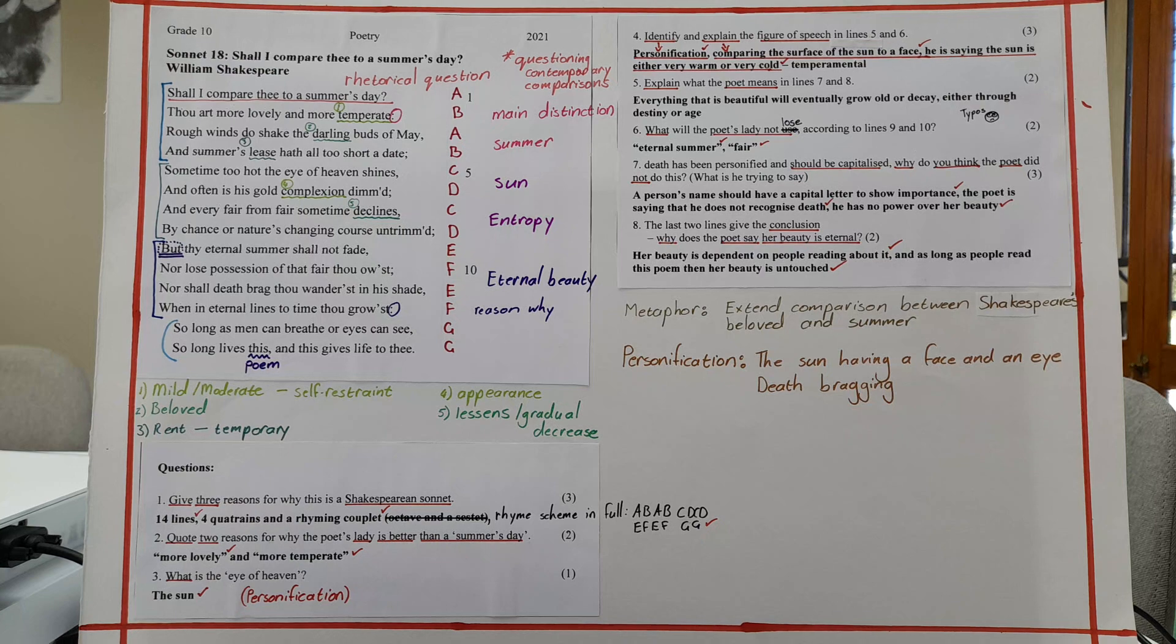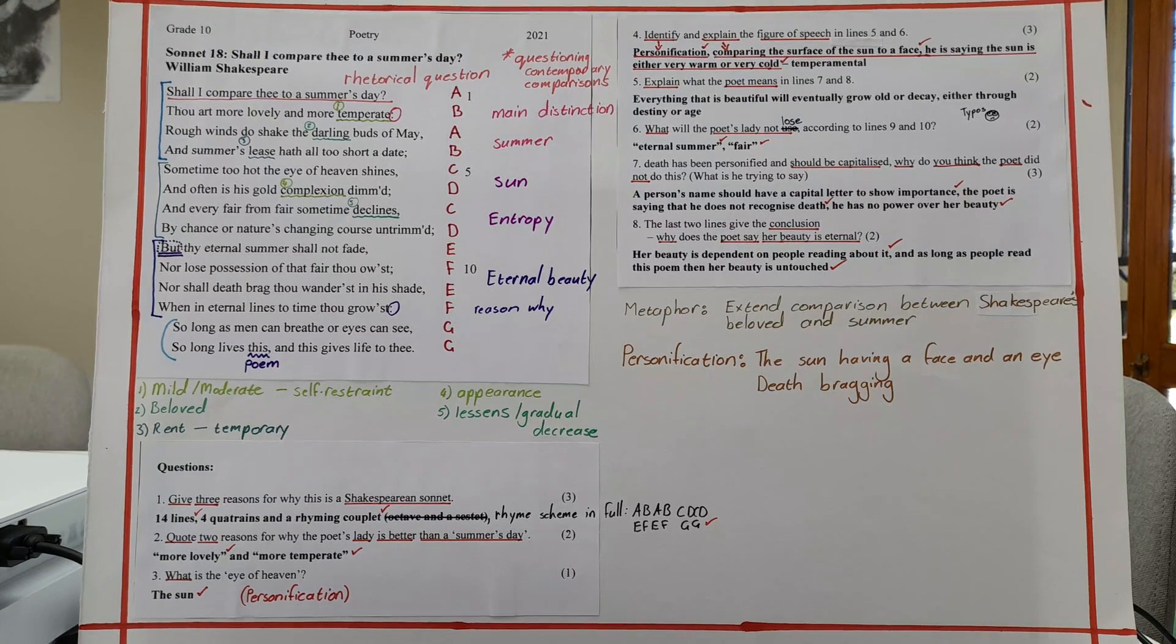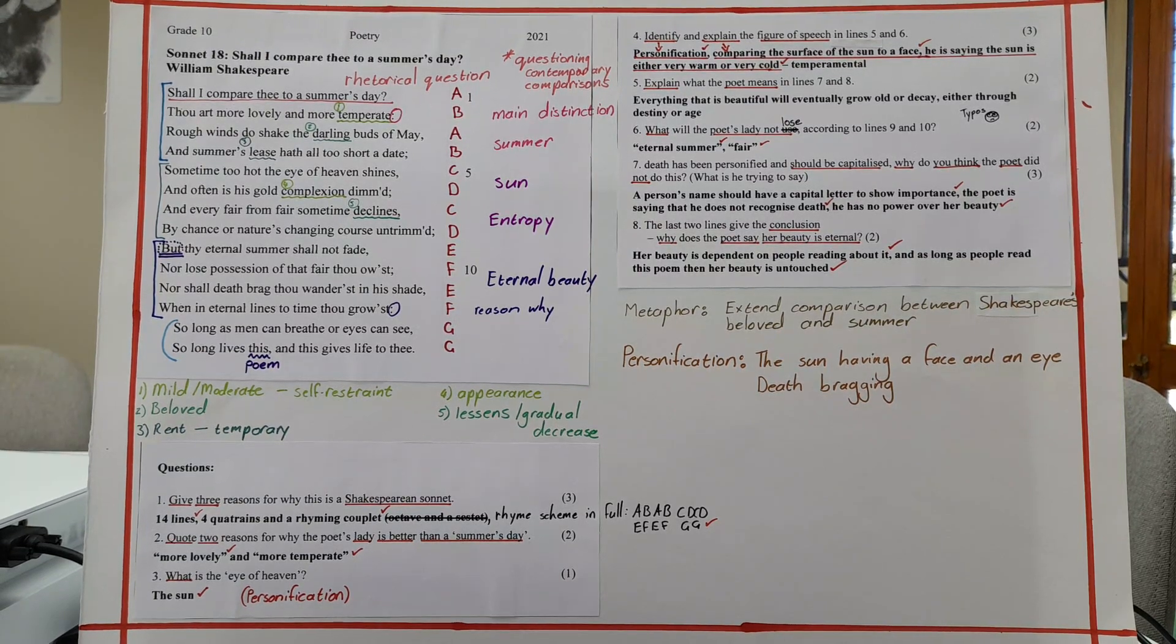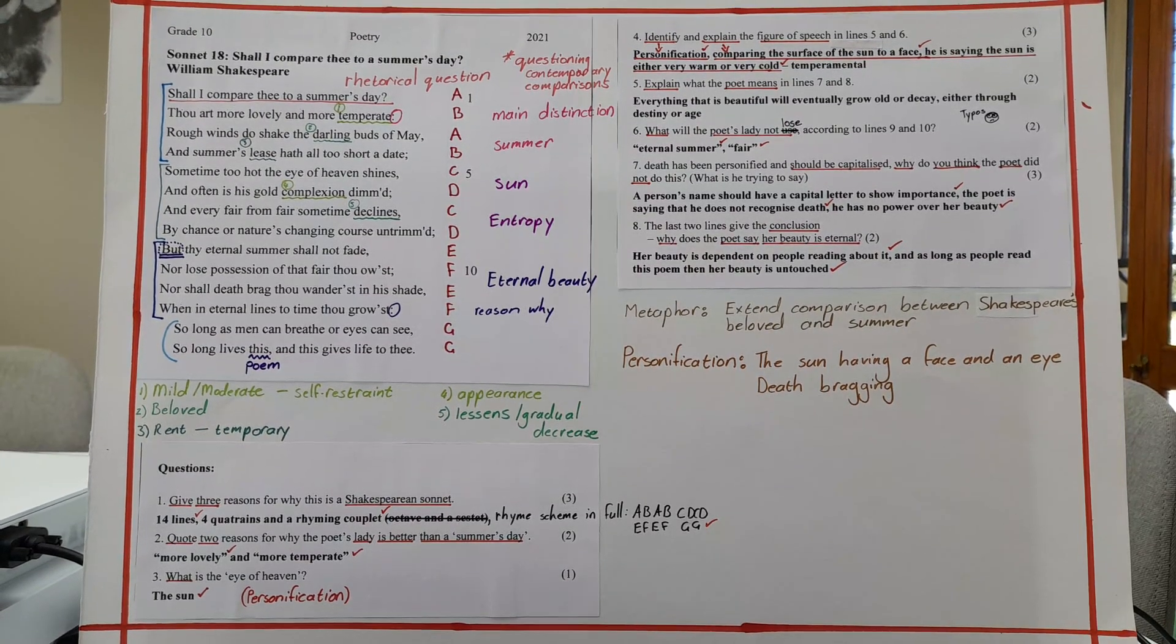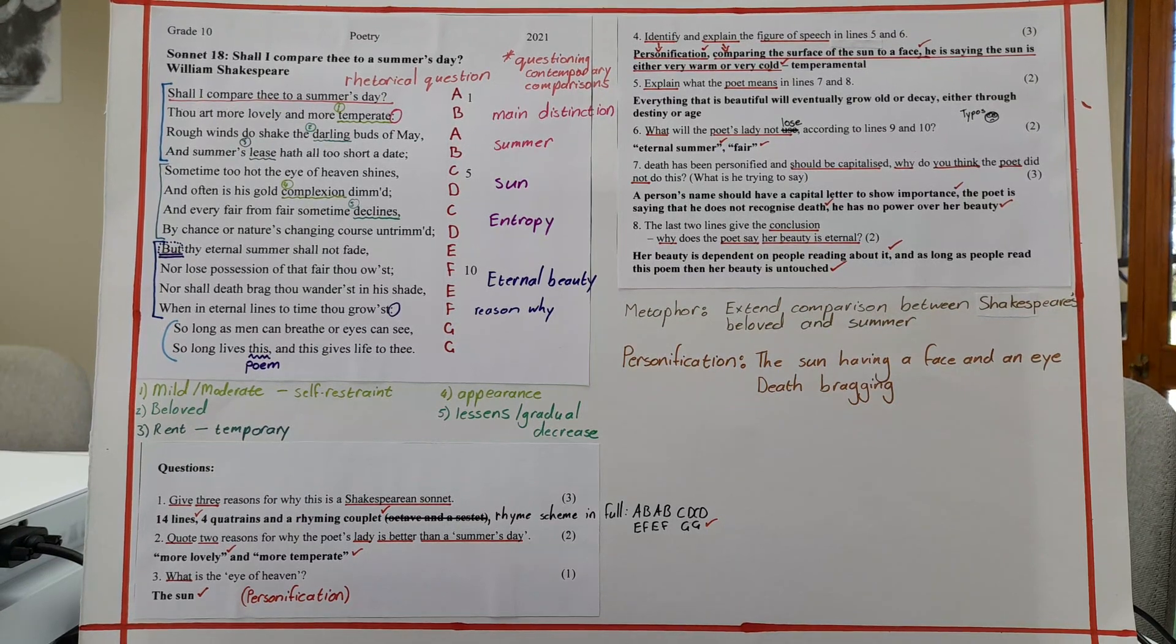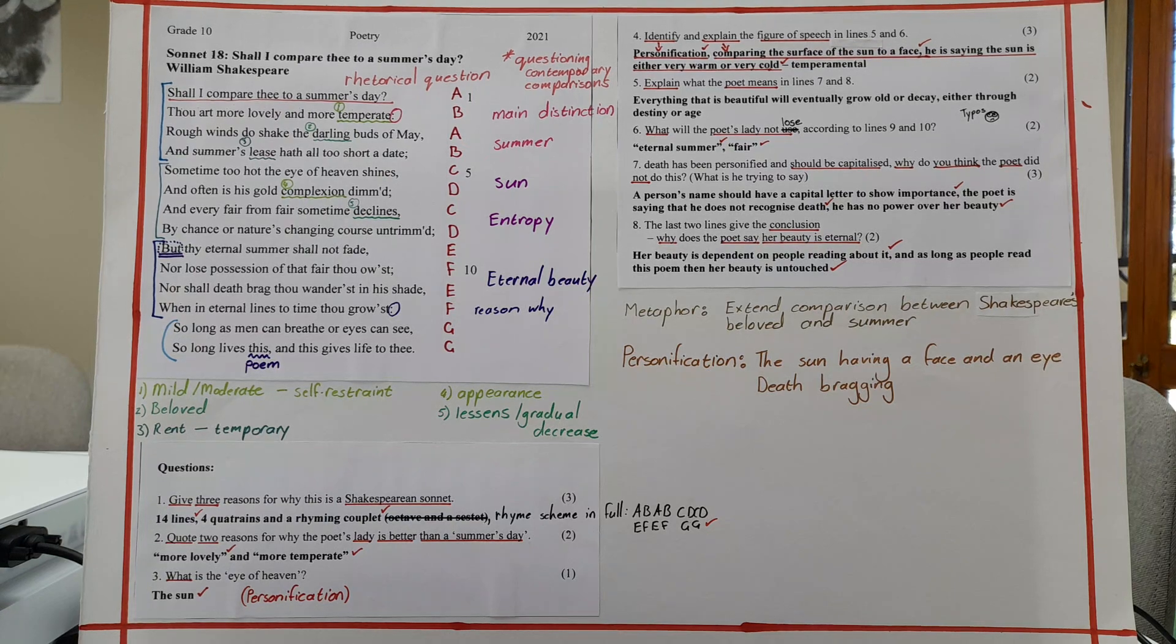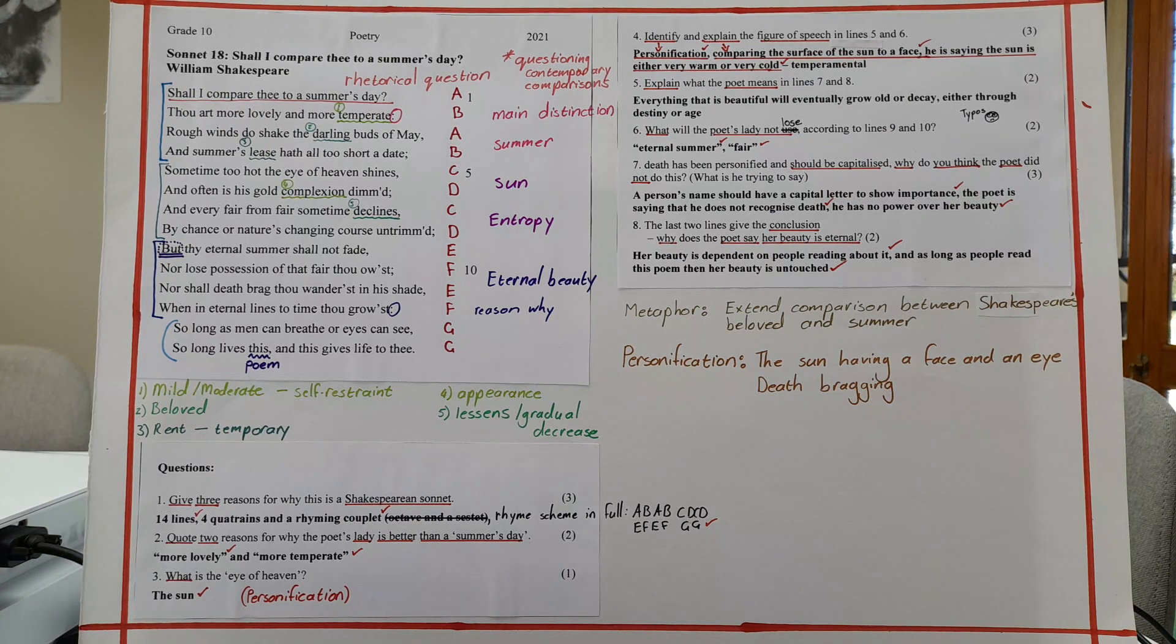So what is the point of that? What's the purpose of that? What is it doing? He is saying the sun is either very warm or very cold. In other words, it's temperamental. Okay, and that would be the third mark. So there are always reasons for why a figure of speech is used, for why a particular image is used. Something that the poet, the writer, songwriter, author wants to convey. So it's personification comparing the surface of the sun to a face. And just like people's emotions change, just like their facial expressions change. So does summer. So does the sun.